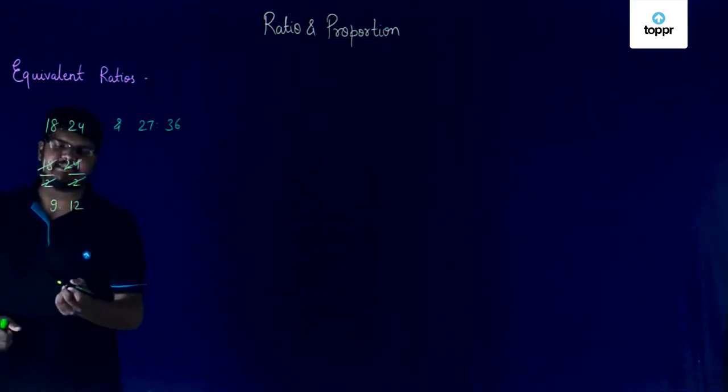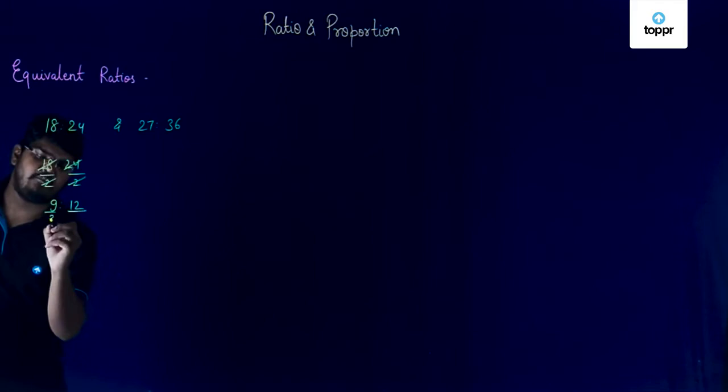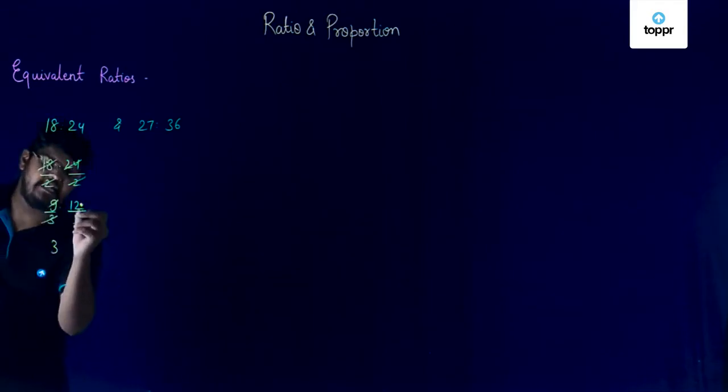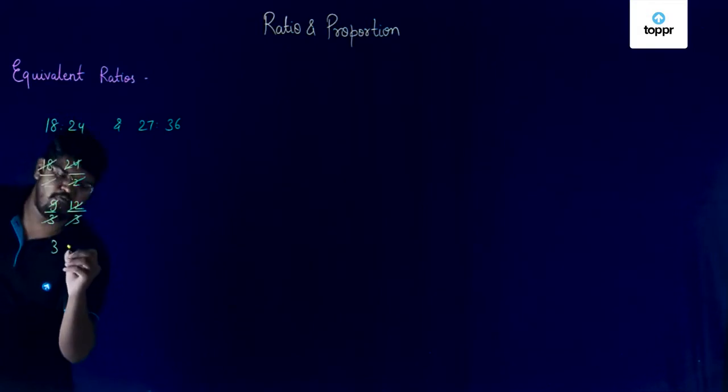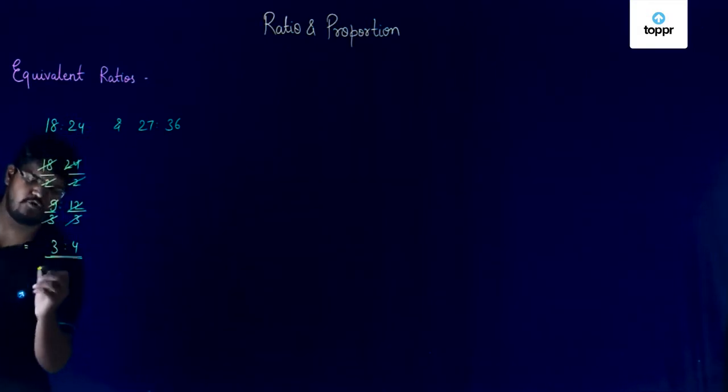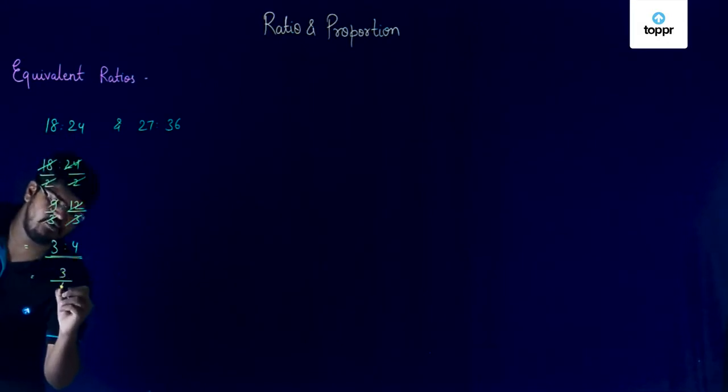Then again both these numbers have common factor 3. So, 9 by 3 will give us 3 and 12 by 3 will give us 4. So, the simple whole number ratio will be 3 is to 4 or we can say that it will be equal to 3 by 4.